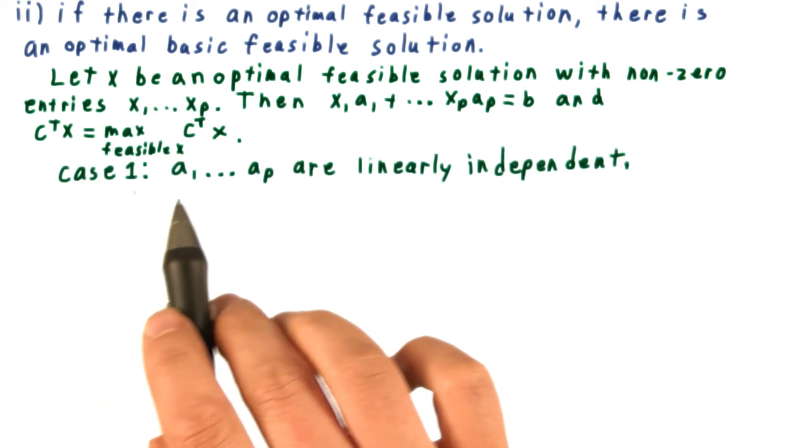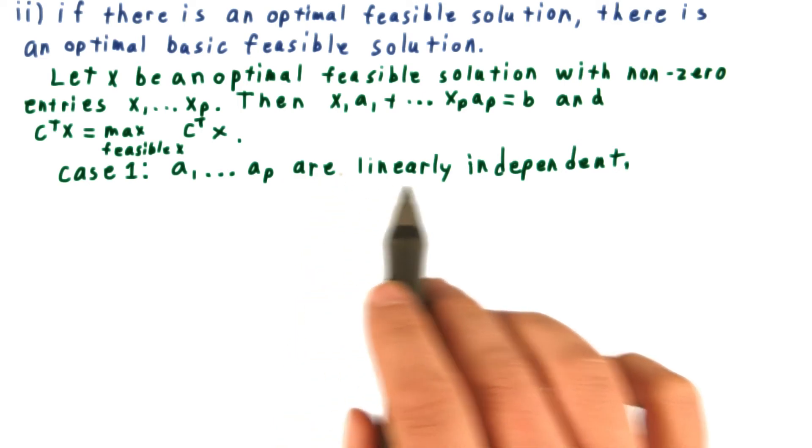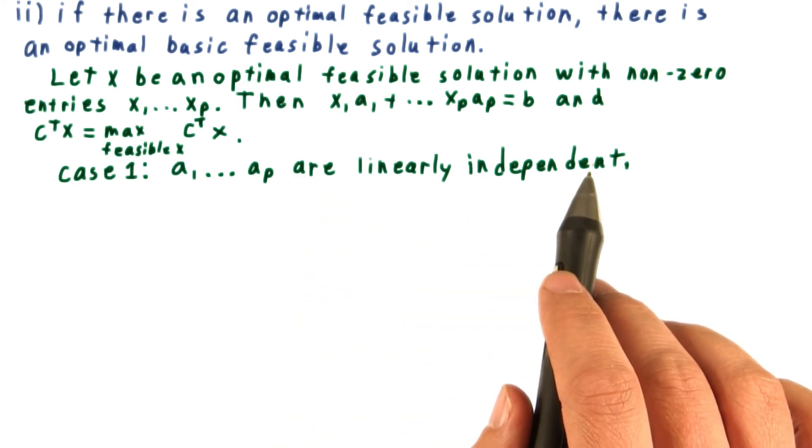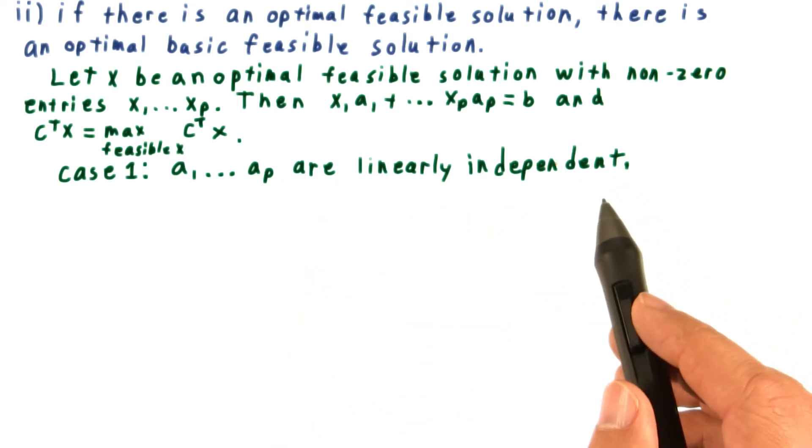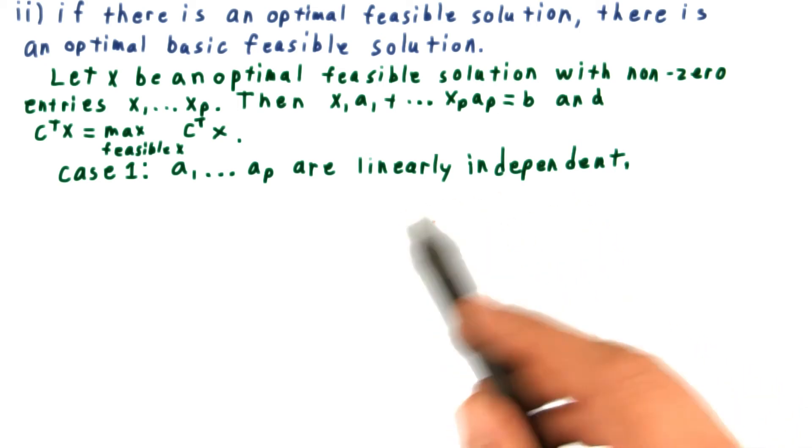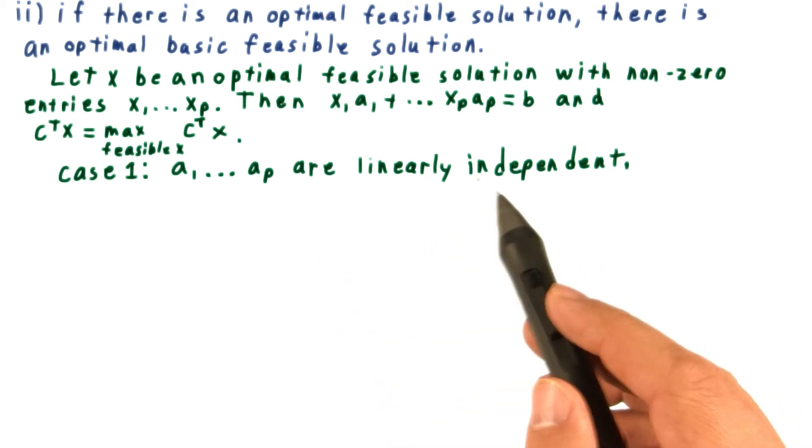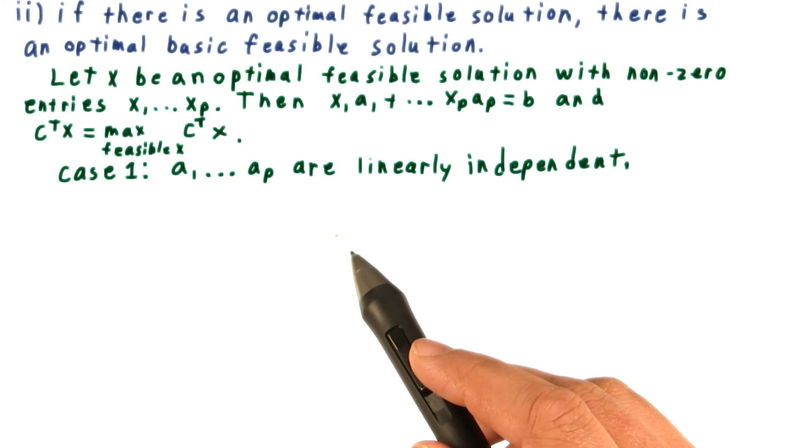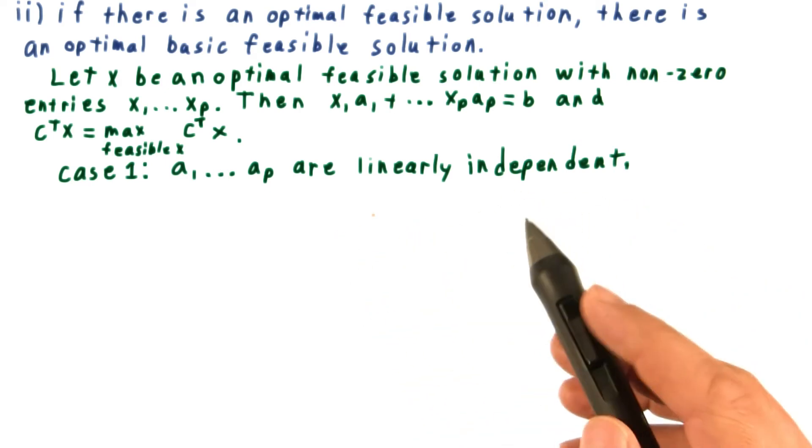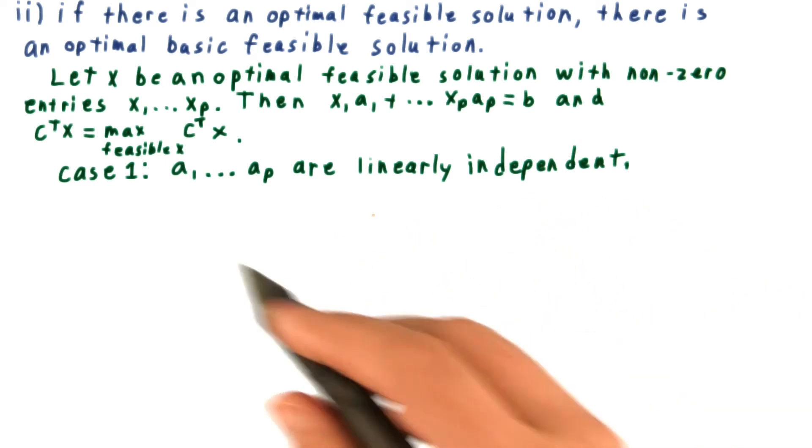Again, we first consider the case where the columns a1 through ap are linearly independent, and the situation is the same as before. P being greater than m is impossible, equal means that it's a basic solution, and less just means that it's a degenerate solution. This case is simple.